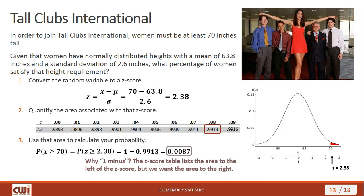So 0.0087 is the probability that a randomly selected woman satisfies the height requirement for Tall Clubs International. For many years the organization was for tall women only, but eventually Tall Clubs International began admitting men as well. The standard for men is higher — last time checked, around 74 inches — so men must meet a different standard than women to join.